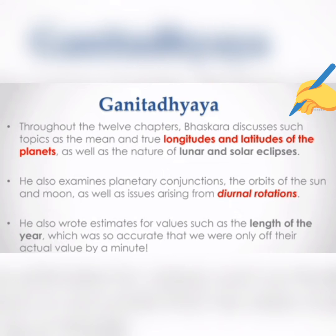Throughout the 12 chapters of Graha Ganit, Bhaskara discusses topics such as the mean and true longitudes and latitudes of the planets, as well as the nature of lunar and solar eclipses.